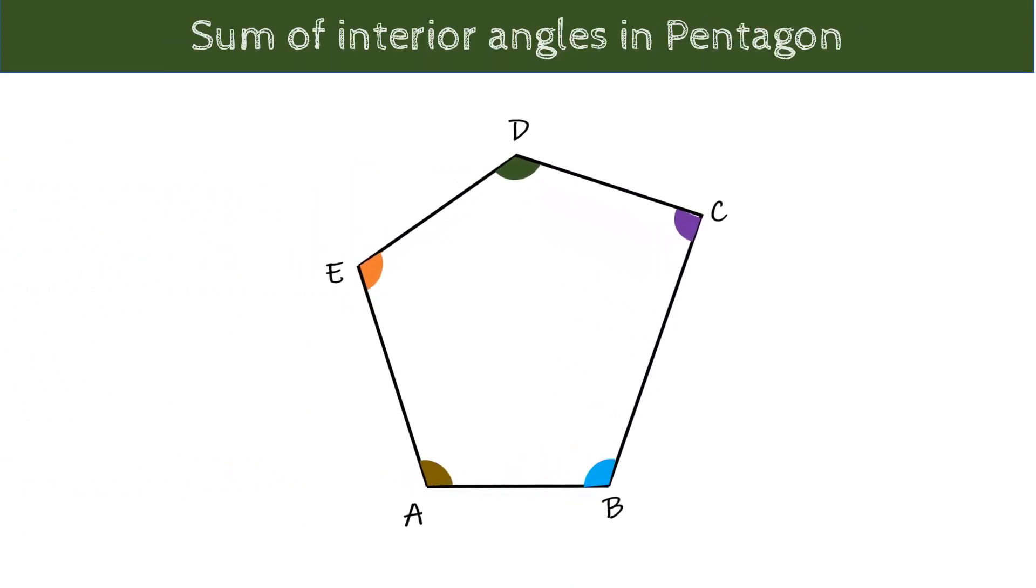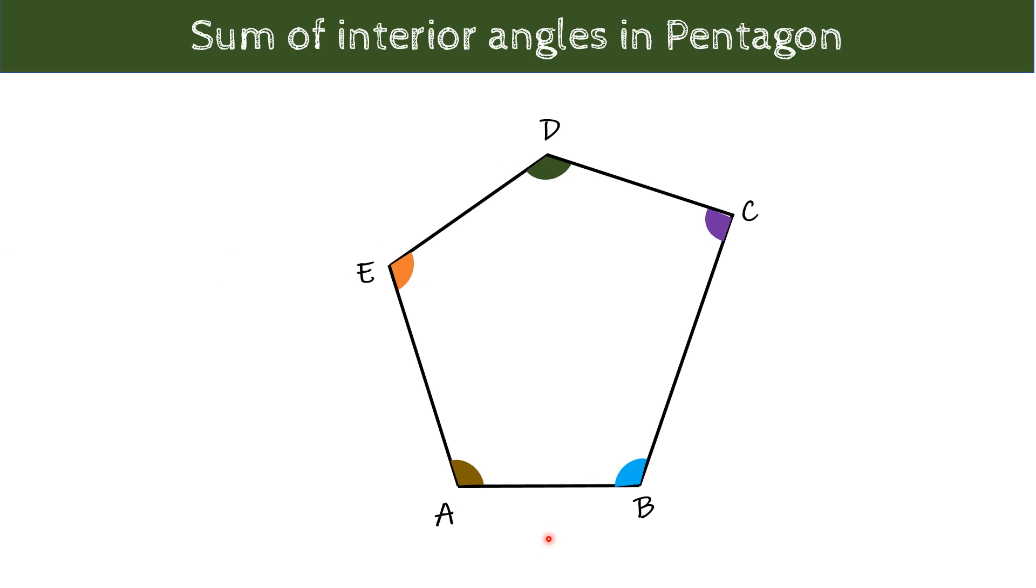We know that the sum of the interior angles of a triangle is equal to 180 degrees. So, we will try to divide it into a number of triangles. From this point B, we can join E to get our first triangle as A, B, E and then from point E to point C to get second triangle as E, B, C and third triangle as D, E, C.